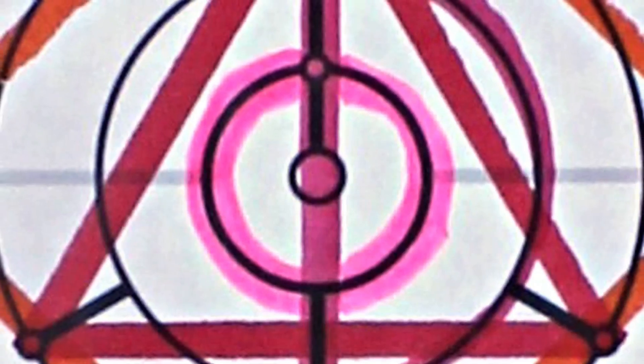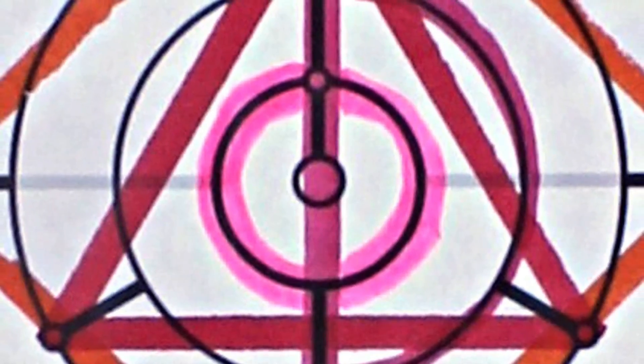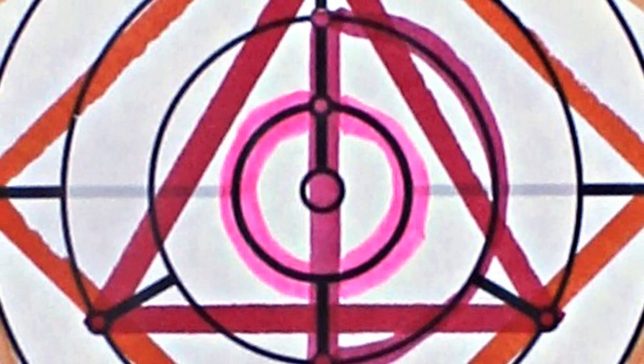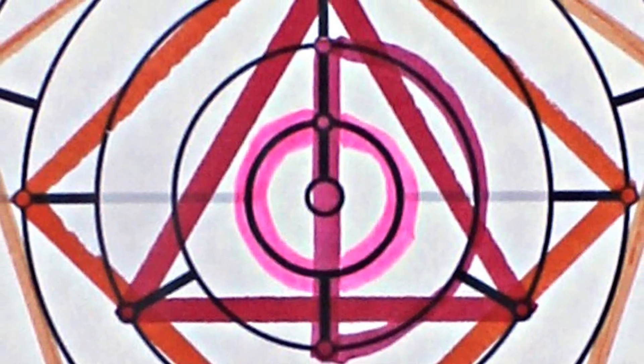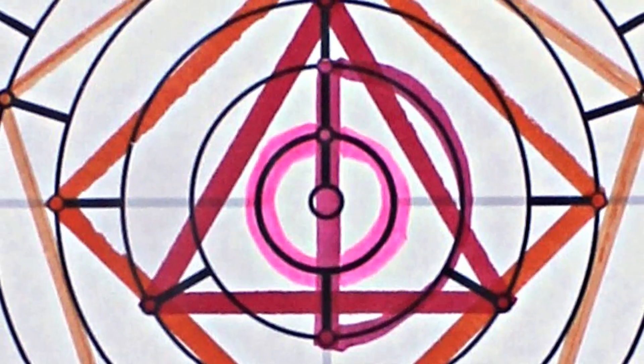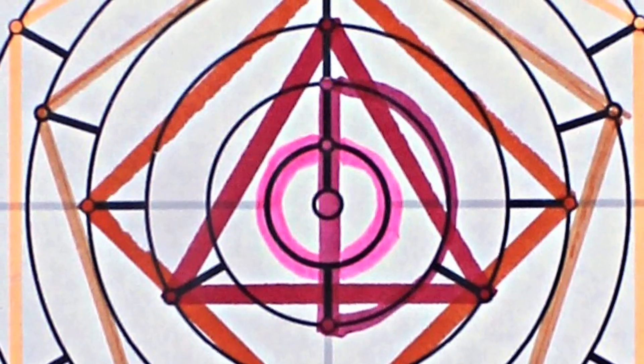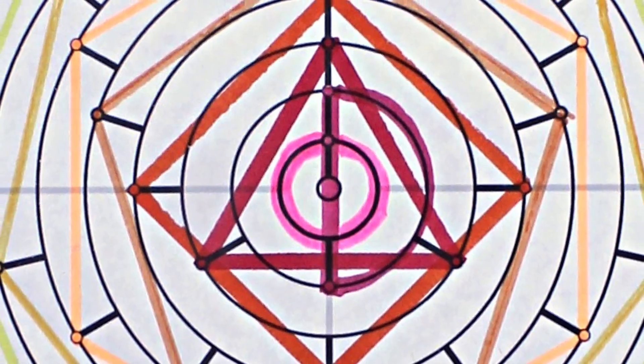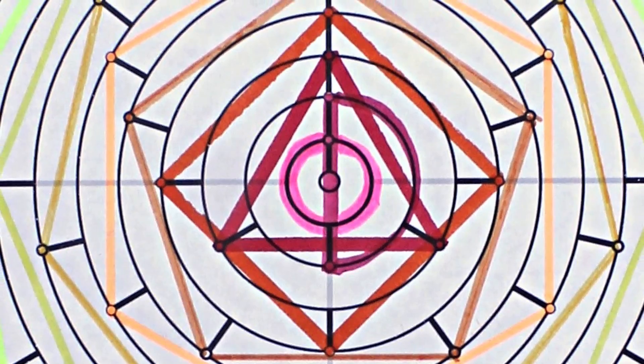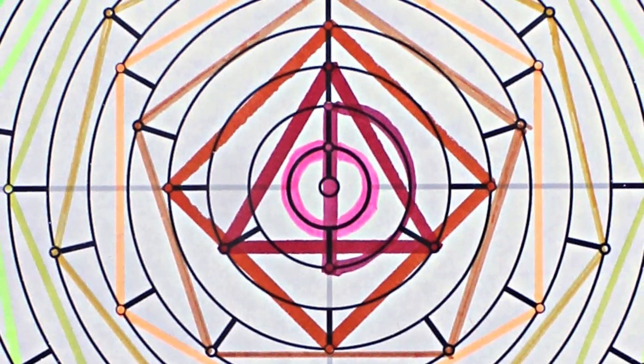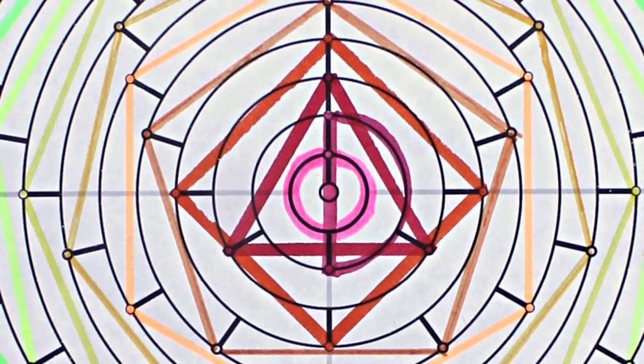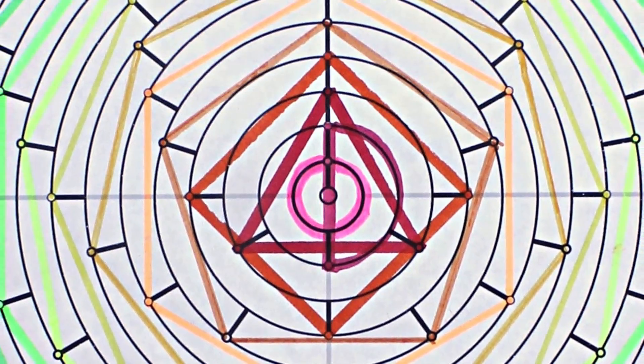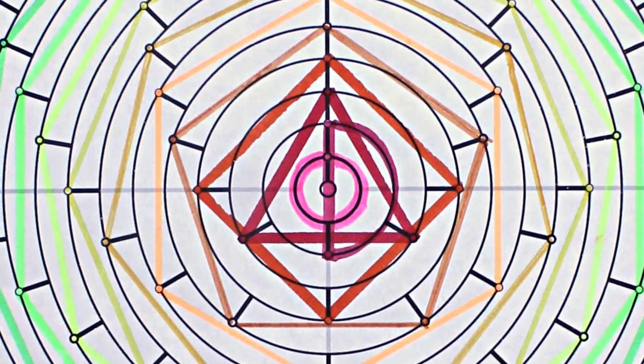2 Crescent equals 90 BPM at 45 equals 66.66 BPM at 33.3. 3 Triangle equals 135 BPM at 45 equals 100 BPM at 33.3. 4 Square equals 180 BPM at 45 equals 133.33 BPM at 33.3.